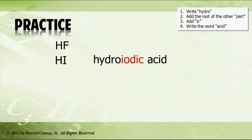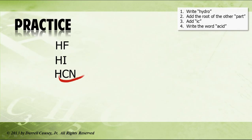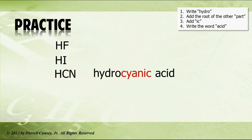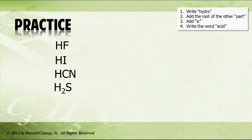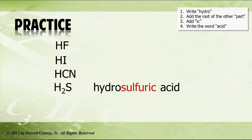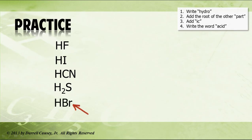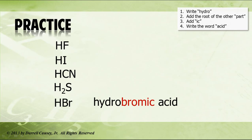Pretty simple, isn't it? Now this one is a polyatomic ion — cyanide. We look up its root, which is cyan, so hydrocyanic acid. H2S: we see sulfur, so that would be hydrosulfuric acid. H with Br — that's brom — add -ic, and we have hydrobromic acid. It's really just that simple.